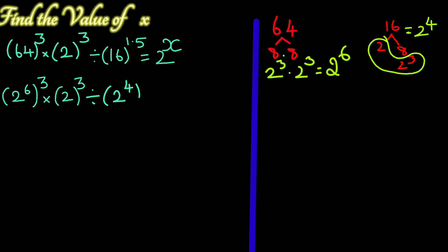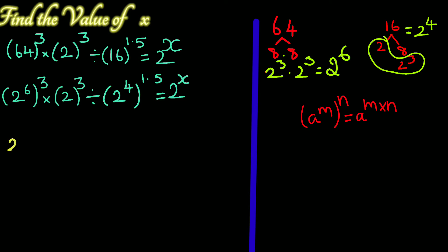The whole power 1.5 equals 2 to the power x. With 64 as 2 to the power 6 and applying power of power, we have 2 to the power 18 times 2 to the power 3 divided by 2 to the power 6 equal to 2 to the power x.